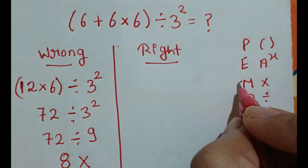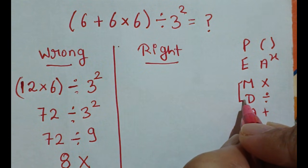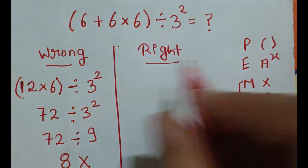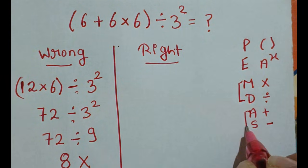Here you have to remember: multiplication and division both have equal priorities, therefore go from left to right. Same for addition and subtraction.